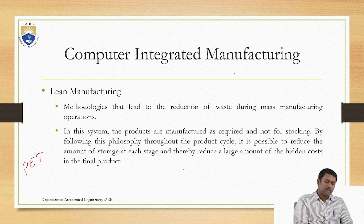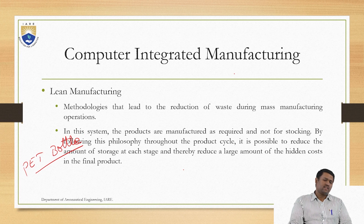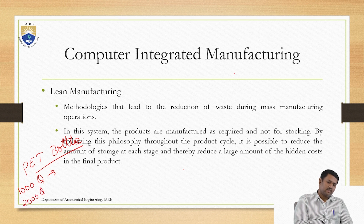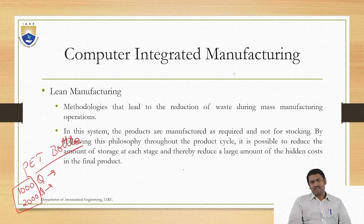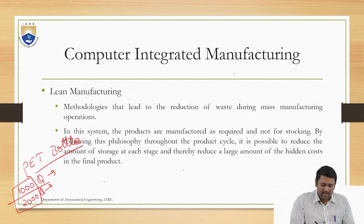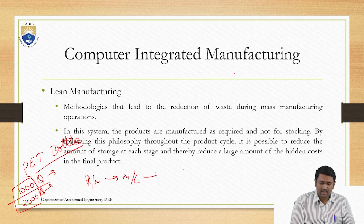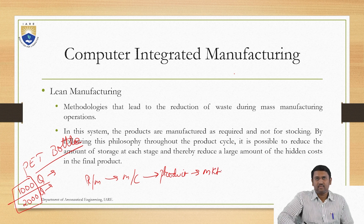Let's say I want to create PET bottles — 1000 quantity now and 2000 quantity later, which is 3000 total. Instead of producing all 3000 at a time, what lean manufacturing methodology says is basically to make whenever the requirement comes. For now, I have a 1000 quantity order. The process involves creation and storing of raw materials, raw materials to machine, machine to product, and product to market.